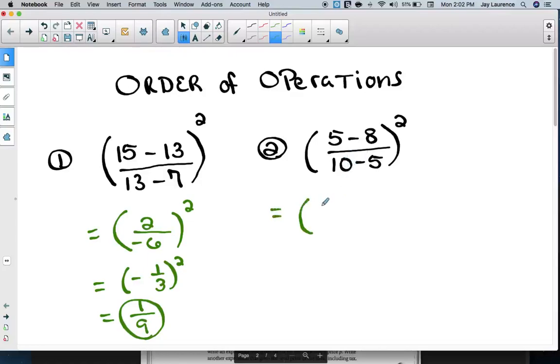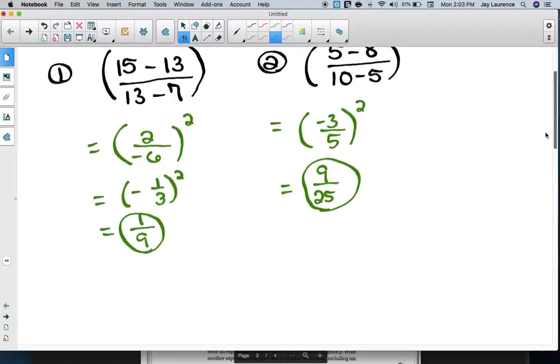All right, I am going to subtract in the numerator, 5 minus 8 is negative 3. I am going to subtract in the denominator, 10 minus 5 is 5. I get a negative 3 fifths. I am going to square that. There is nothing to simplify. There is no common factor other than 1. 3 times 3 is 9. 5 times 5 is 25. The answer is 9 twenty-fifths. And it is a positive because when I multiply a negative 3 fifths by a negative 3 fifths, I get a positive 9 twenty-fifths. So, a negative times a negative is a positive.